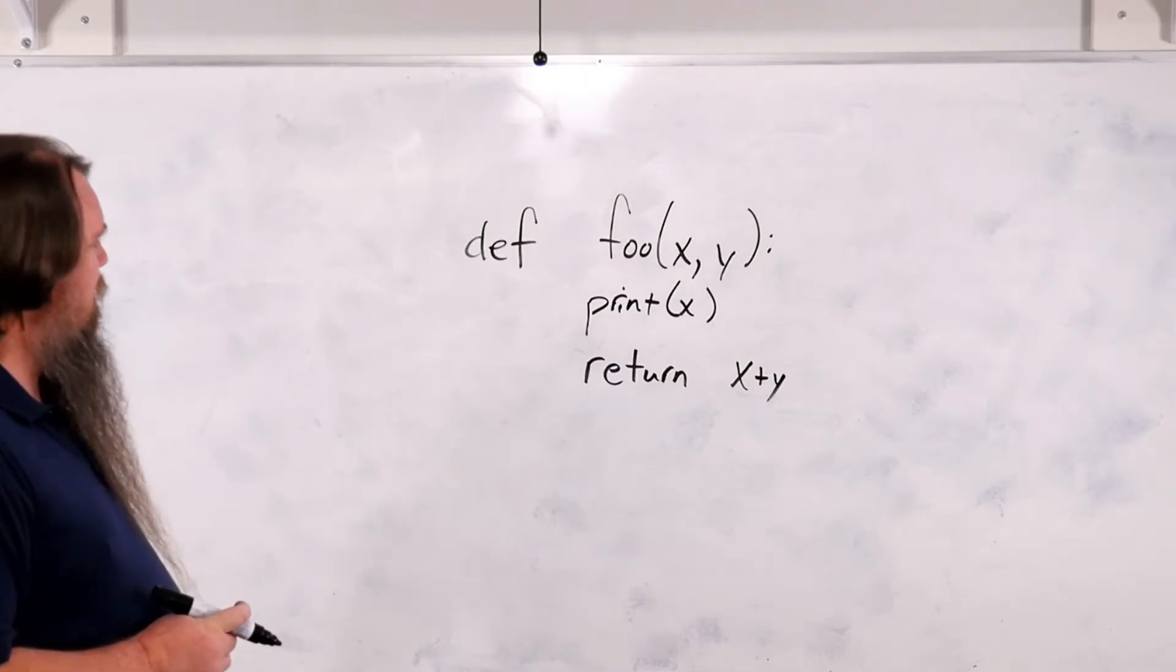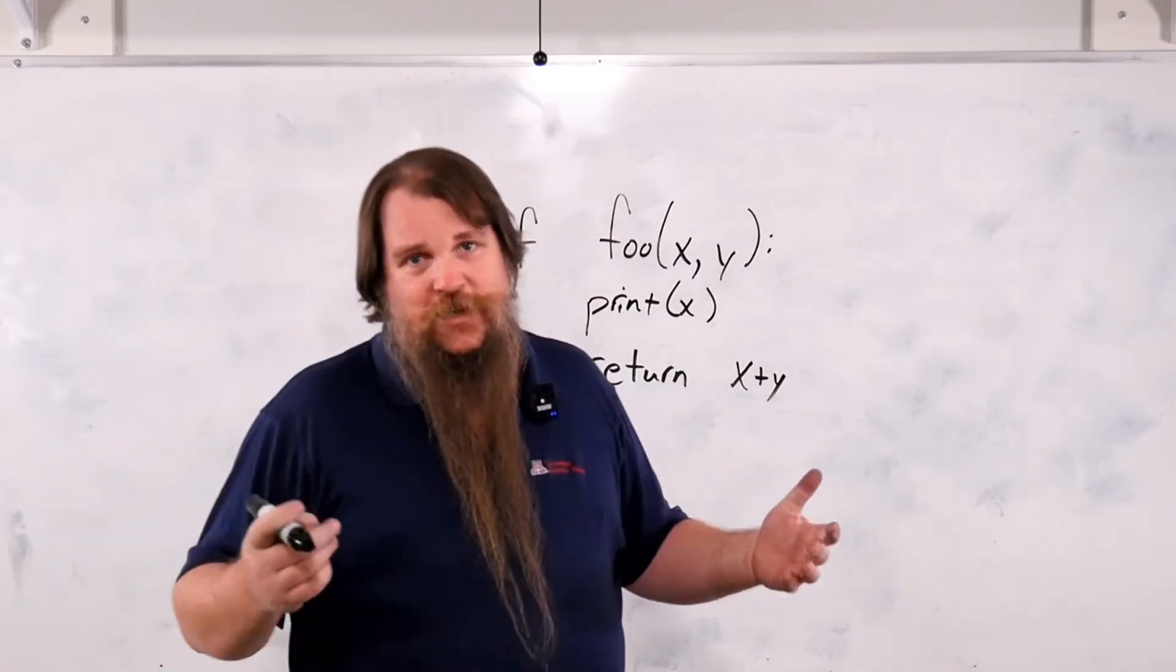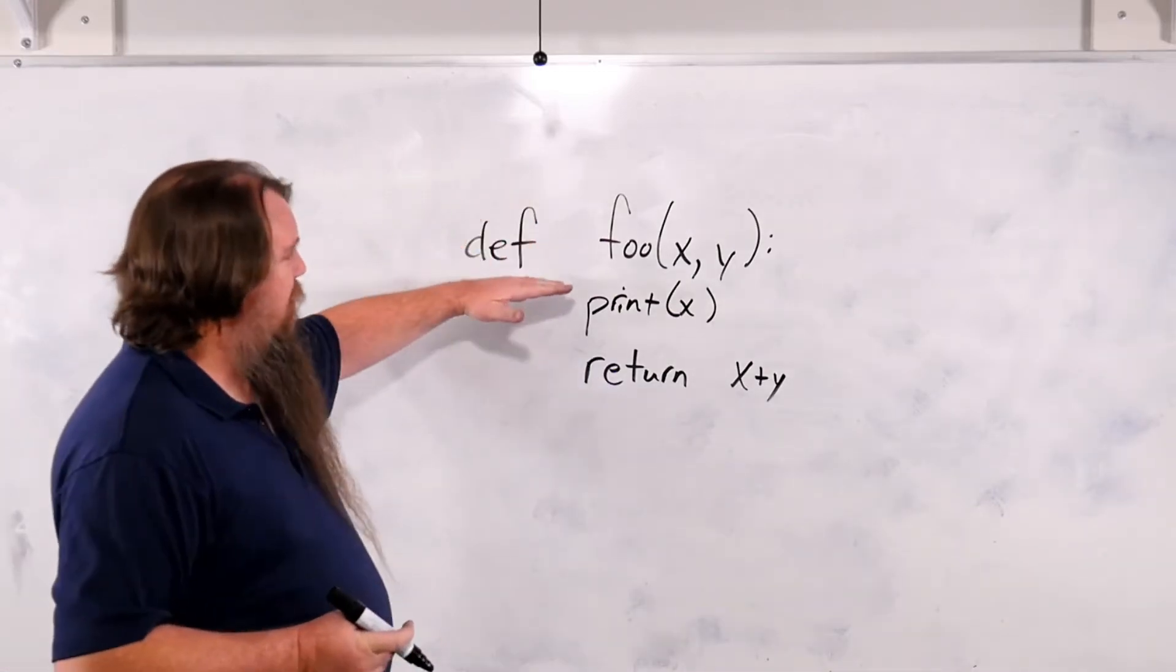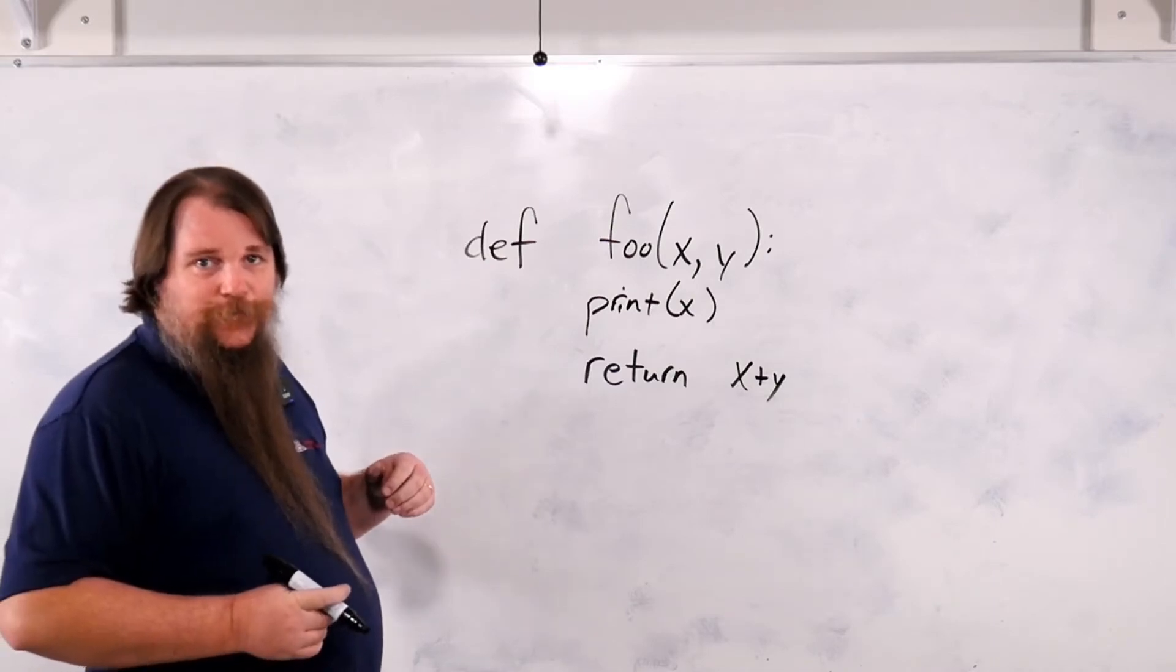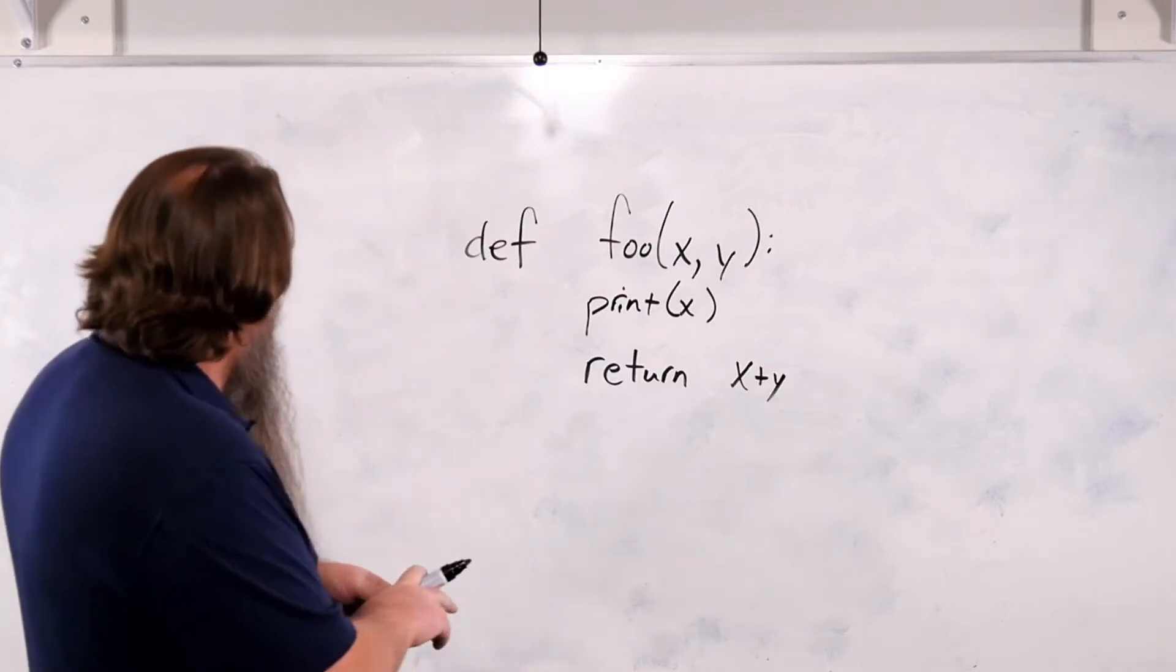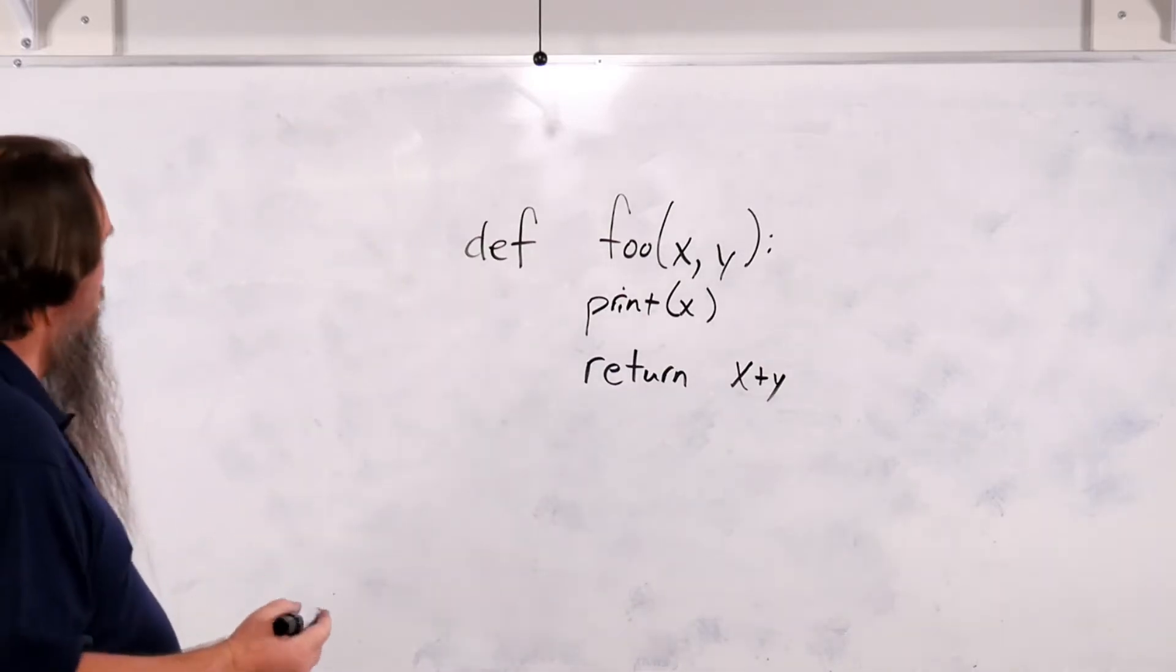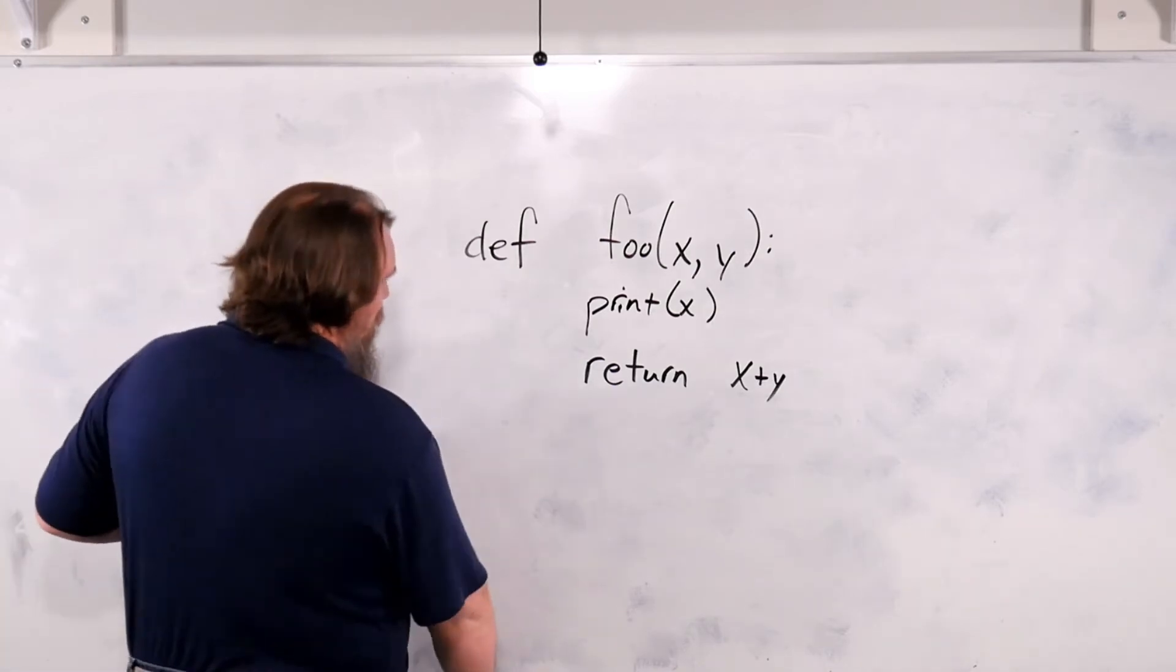Now we're not going to go in detail about what return none means yet. When we talk about references, we'll start to understand what none exactly means. But for now, most of your functions should either do an explicit return with no value, or with a value like this. I'm making the assumption here that whatever language you're coming from, you've already seen functions a lot, so you probably don't need a lot of the details because it's going to be the same in Python. But let's give a few examples.